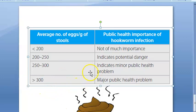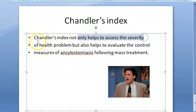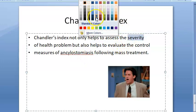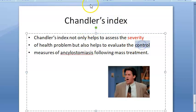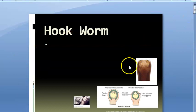Chandler's Index not only helps assess the severity of the health problem but also helps evaluate control measures. Knowing the severity helps decide which control measure to give. Treatment includes albendazole, mebendazole, and pyrantel pamoate. Mass treatment can also be given based on the index.